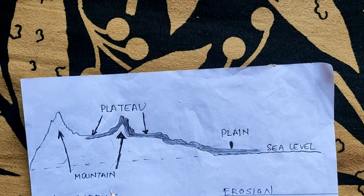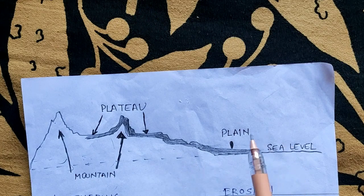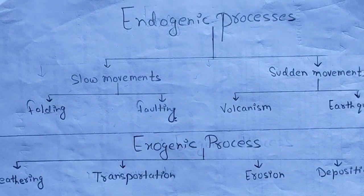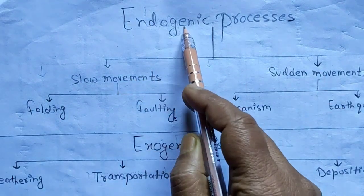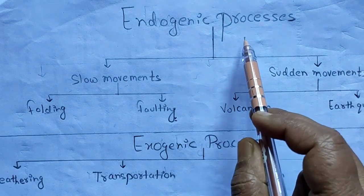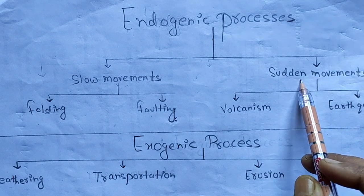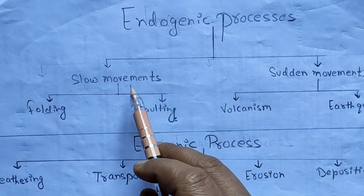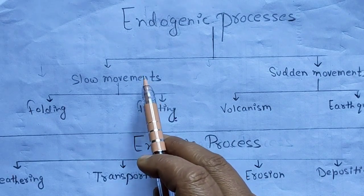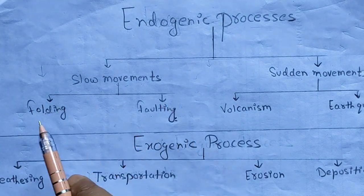This was the short introduction of mountains, plateaus, and plains, which we will discuss in more detail later. These landforms are an outcome of two processes: endogenic processes and exogenic processes. Endogenic processes are divided into two types: slow movements and sudden movements. Slow movements are further divided into folding and faulting.